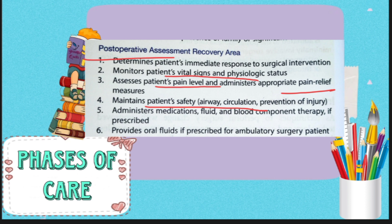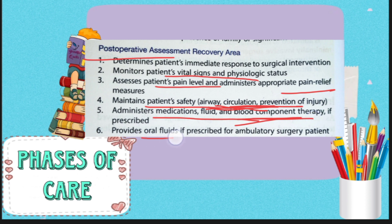If any warning sign occurs and the physician is not present, action can be taken under the guidance of the senior staff present. To act quickly, emergency equipment should be arranged in advance. General treatment includes medications, fluids, blood transfusion if RBC levels are reduced, and oral fluids for maintaining electrolytes and fluid balance.